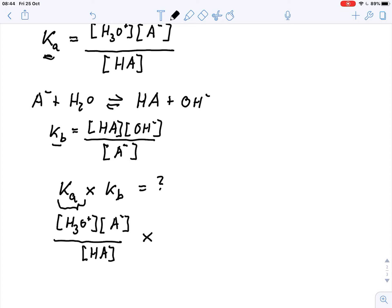And now I multiply that by Kb, which I've written here, equals the concentration of HA times OH minus divided by the concentration of the base.